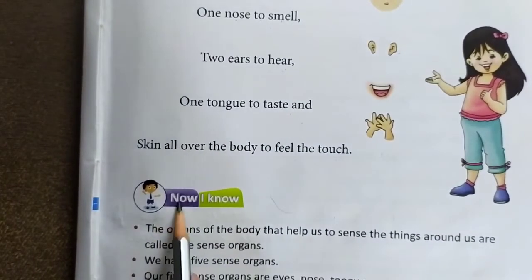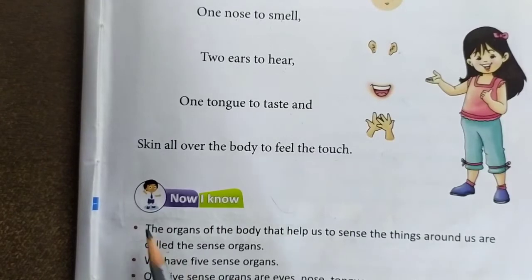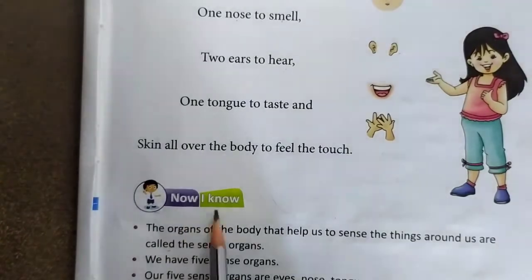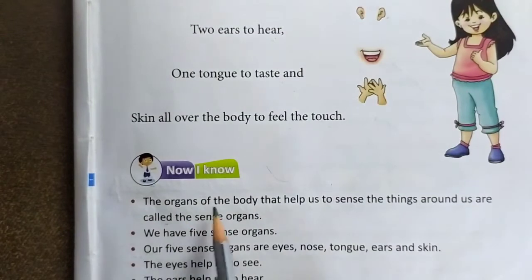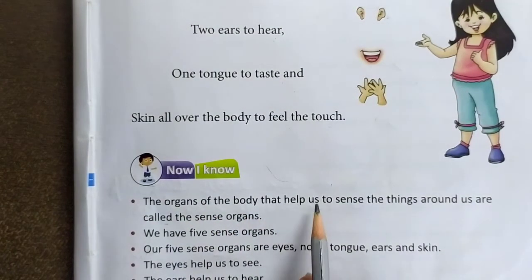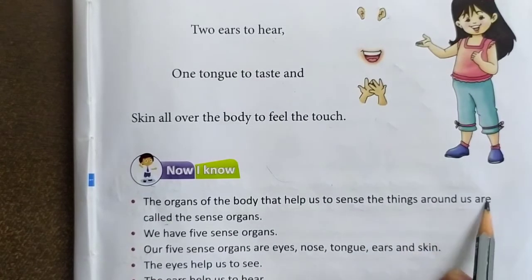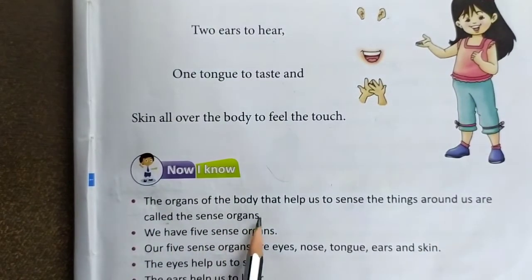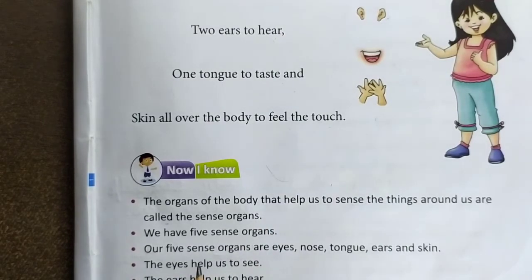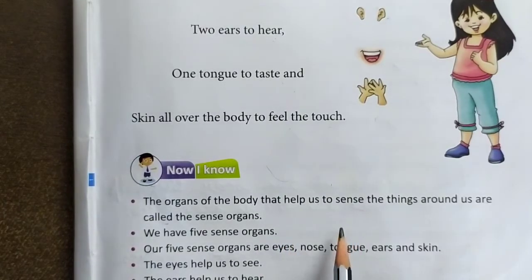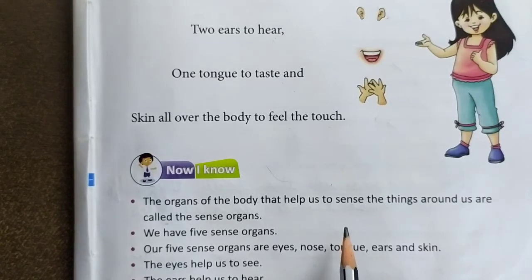Now I know — ab mein jaanta hoon. The organs of the body that help us to sense the things around us are called sense organs. Hamaare sharir ke woh ang jo hamein apne aaspaas ki cheezon ko mehsus karne mein madad karte hain, unhe indriya yaani sense organs kehte hain.